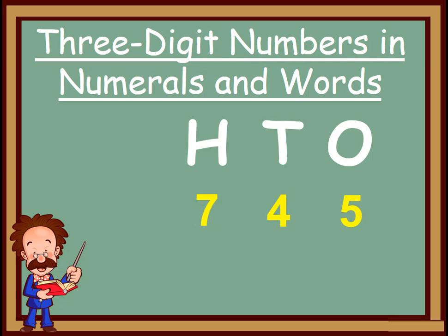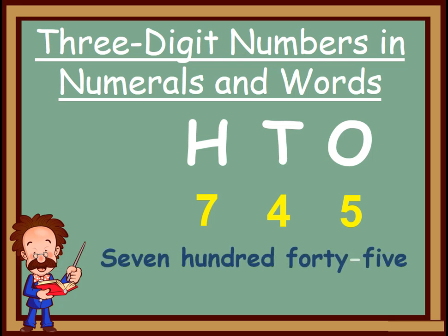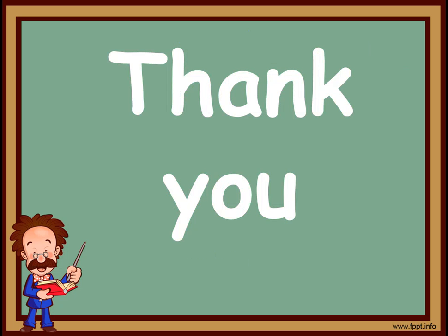Next one: 7, 4, 5. This is also a 3 digit number. Can you read the number? Yes, 745. Very good. Can you write this number in words? As I told you, yes, we write as we read. We read it as 745, so we will write it as 745. And do not forget to put a hyphen when putting two words together. Excellent, my kids. I hope now you can write 3 digit numbers in words. Thank you.